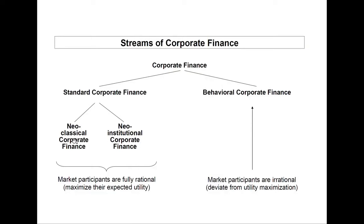Second, there are no transaction costs. Third, all securities are perfectly divisible — so for instance, you can buy 2.47 stocks. Fourth, there is perfect competition on the capital market. Therefore, all market participants are so-called price takers, which means that nobody can influence the security prices with his orders.